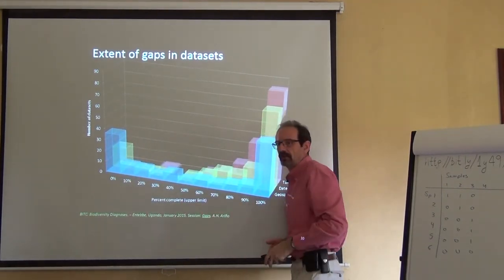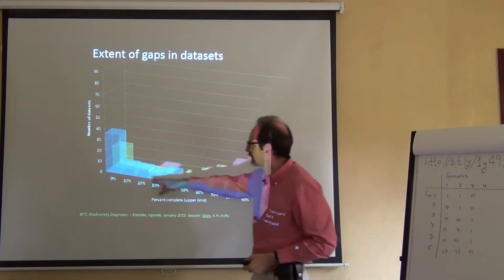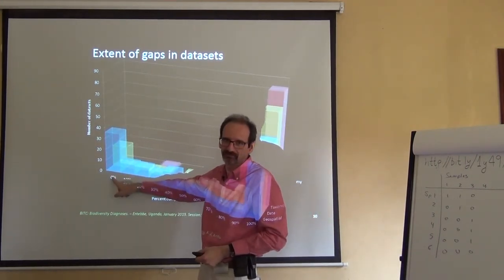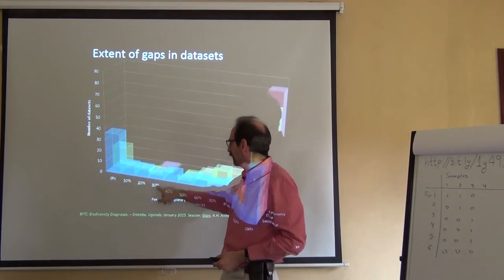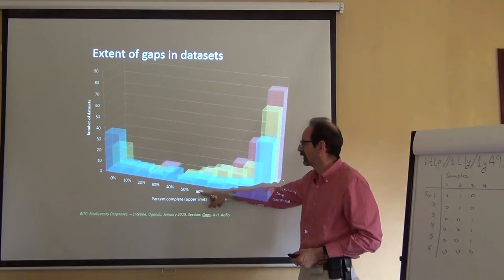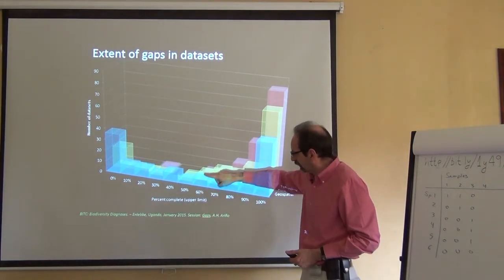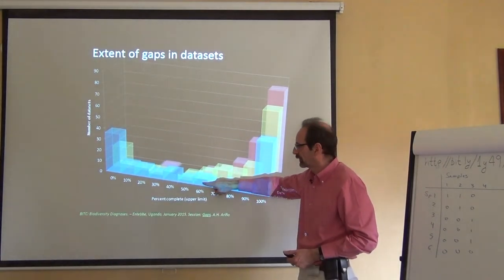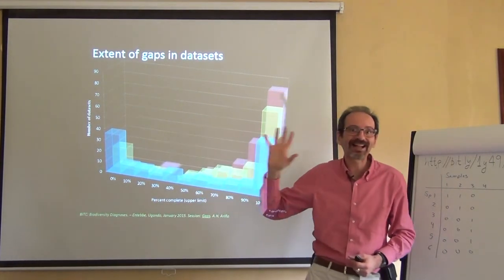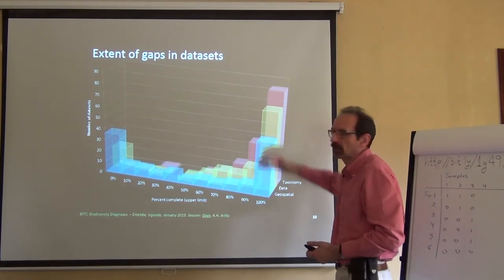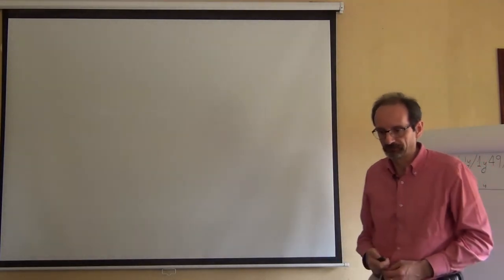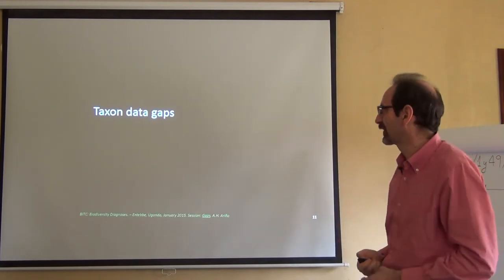But those columns represent the number of datasets that might have no data or only a partial amount of data in their records. 60% means that 60% of the data records are complete, which means that 40% are not complete, are lacking something, are lacking coordinates, are lacking taxonomy, are lacking or having bad dates or whatever. So, there are gaps everywhere.